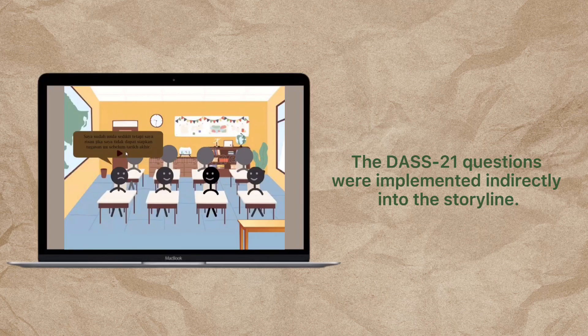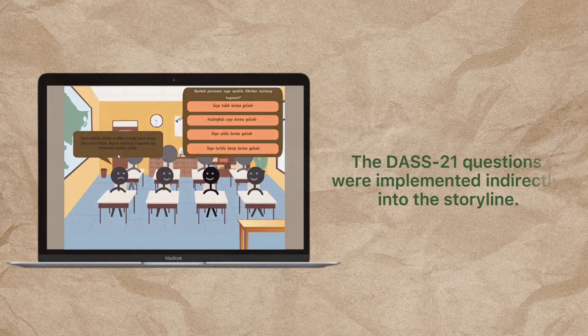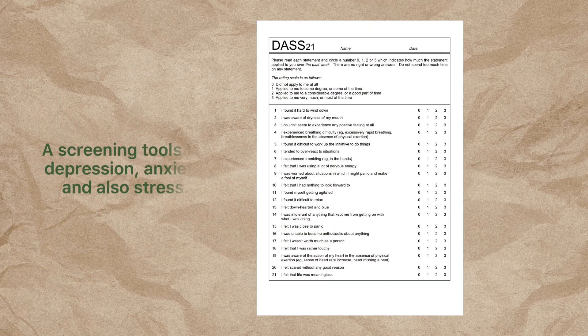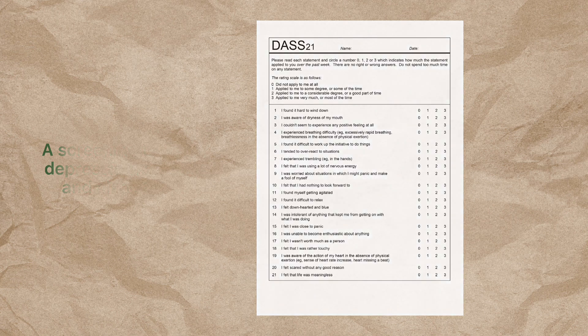The DASS-21 questions were implemented indirectly into the storyline. The Depression Anxiety and Stress Scale, DASS, is one of the screening tools not just for depression, but also including anxiety and stress.